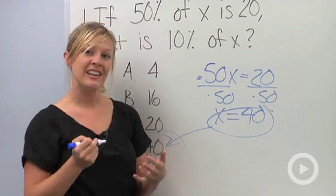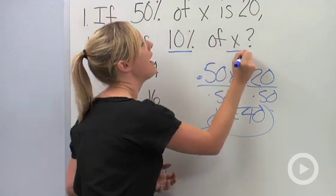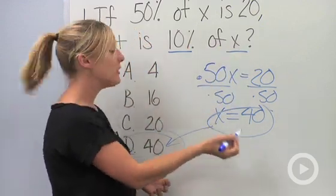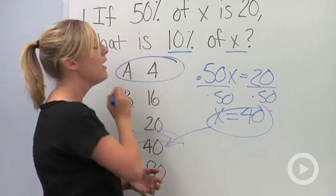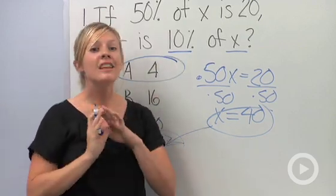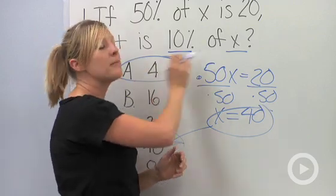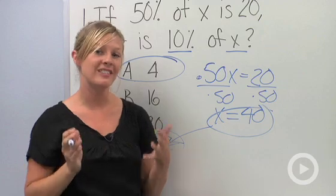We need to actually read the question and see what it's asking. It's asking, what is 10% of X? So if we take 10% of X and we know that X is 40, we know that our correct answer isn't 40. It's actually 4, answer choice A. You're going to see all types of questions, and this is the one that most students mess up on. So it's really important to read the question and to figure out exactly what it's asking.